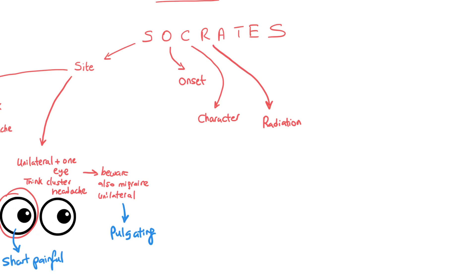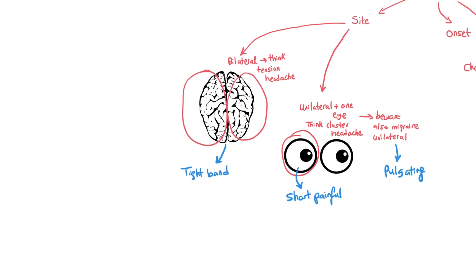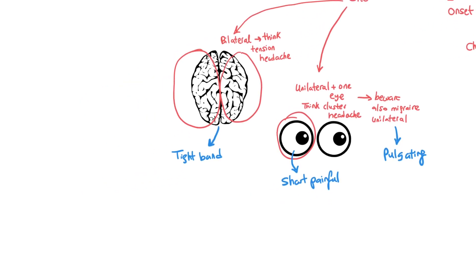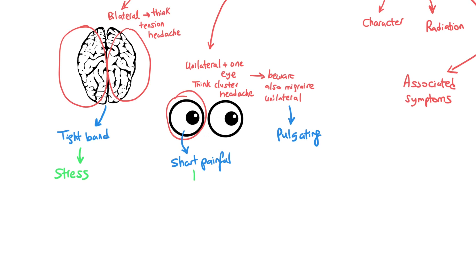The next one is A — Associated Symptoms. This is the main key point to help differentiate your differential. For tension headache, stress is the most common associated symptom. For cluster headache, lacrimation is a common one, and flushing is also very common.